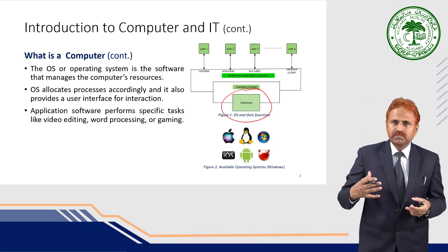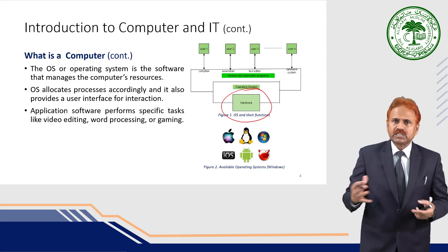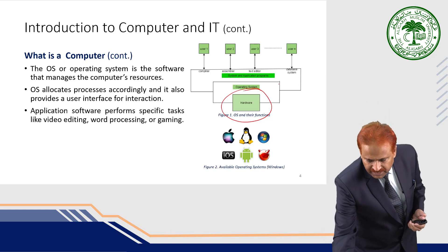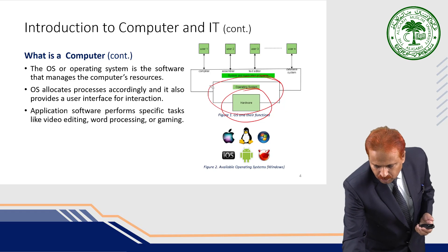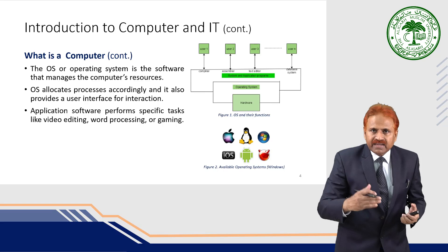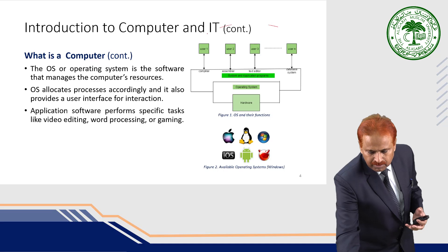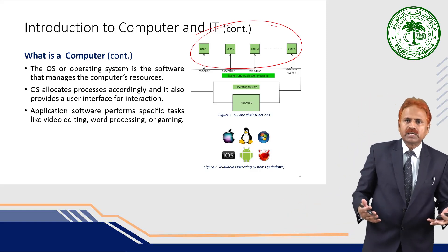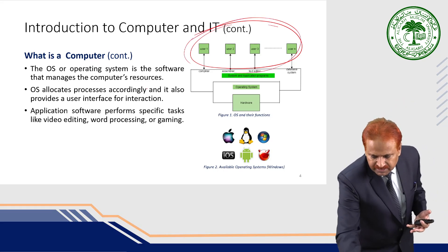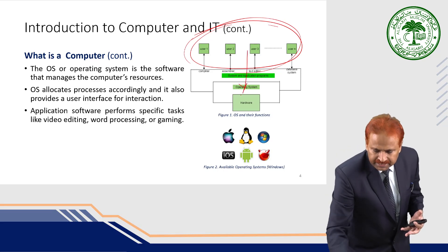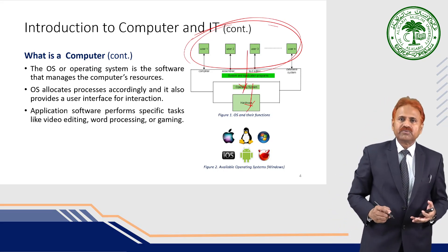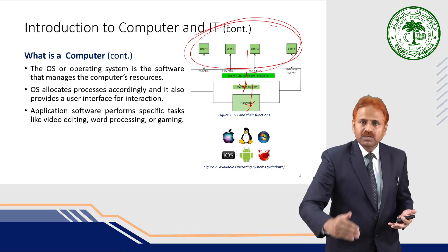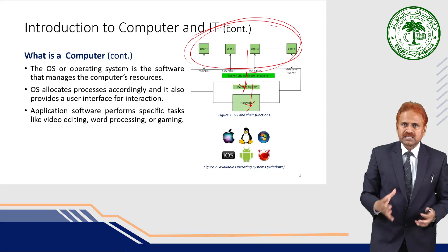It is difficult for us as human beings to directly communicate with the hardware, because hardware understands the language of 1s and 0s — binary language. So to pass instructions in binary language is very difficult. In that case, we have the layer known as the operating system. The operating system interacts with the hardware, and above that we have several programs — user programs, system programs, maybe a compiler, assembler, database system, or editing applications. Users interact through these application interfaces with the operating system, which passes instructions to the hardware in a language it understands. The hardware responds and gives back the processed result to the operating system, which is in turn passed on to the user.